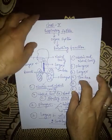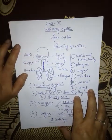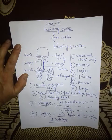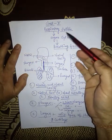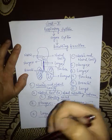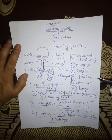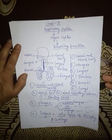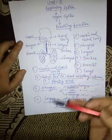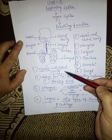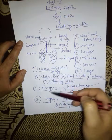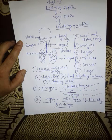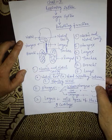Hello students. In the last lecture we were discussing about the respiratory system. Today I am continuing my lecture on the respiratory system. In the last lecture I drew the diagram and taught you about the nostrils, nasal cavity, pharynx, and larynx. So in this lecture I am explaining the next part.